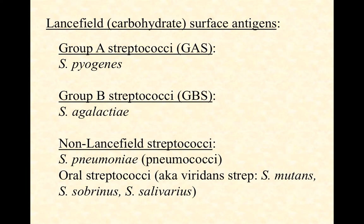According to the Lancefield grouping system, group A and group B streptococci are the primary groups of interest — we call these GAS and GBS. Group A streptococci are strains within the species Streptococcus pyogenes, and they range from very mild, low-virulence pathogens to very aggressive, high-mortality, high-morbidity pathogens. We'll talk about group A strep in a minute.